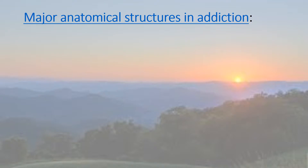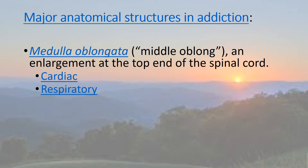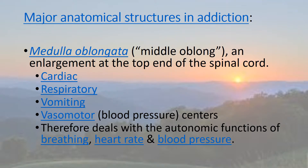The medulla oblongata is the middle oblong, the enlargement at the top of the spinal cord. It controls cardiac, respiratory, vomiting, and vasomotor or blood pressure centers. It's basically concerned with the autonomic nervous system and functions of breathing, heart rate, and blood pressure.